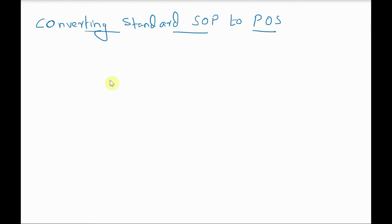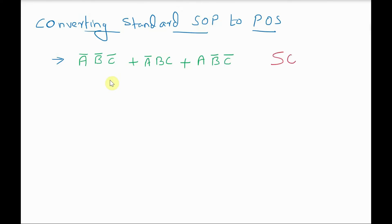In this session we will see how to convert a standard SOP expression to a POS expression. Let us see an example first. Consider the standard SOP expression: A̅B̅C̅ + A̅BC + AB̅C̅. We have to convert this to a POS expression — product of sums.